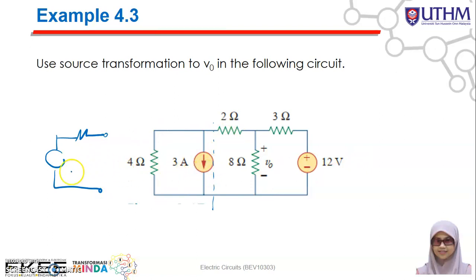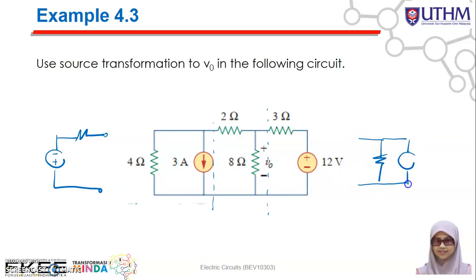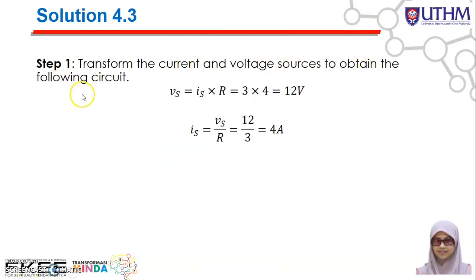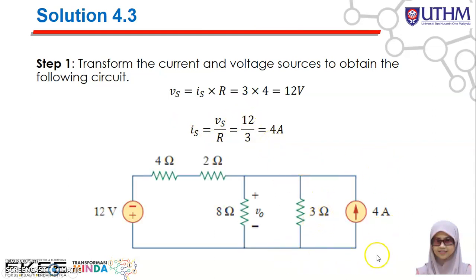Regarding the polarity: the arrow is going down, so the positive terminal is at the top. You can also transform the voltage source to a current source — a parallel resistor connected to the current source, where the positive terminal determines the direction. The current source Is and voltage source Vs are related. So Vs = Is × R: that is 3 amperes × 4 ohms = 12 volts. And Is = Vs ÷ R: 12 ÷ 3 = 4 amperes. So here you have a current source of 4A connected with 3 ohms, and a voltage source of 12V connected in series with 4 ohms.